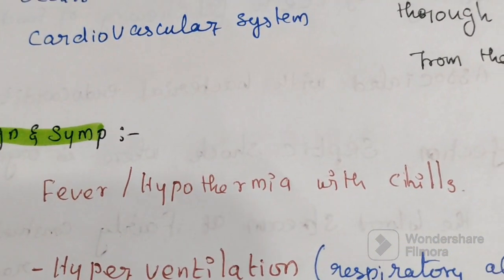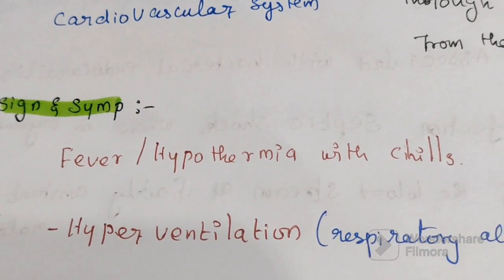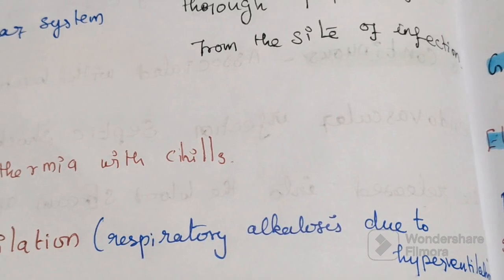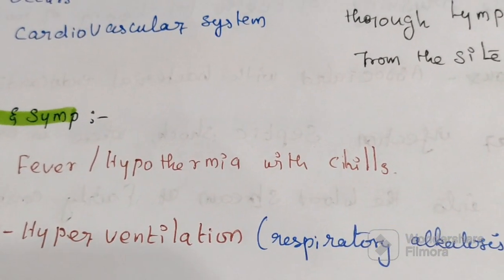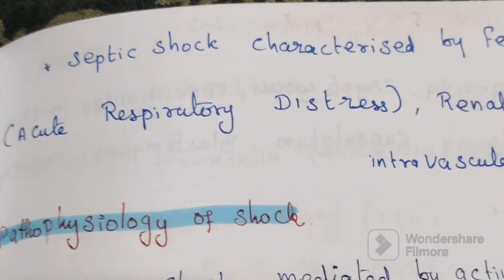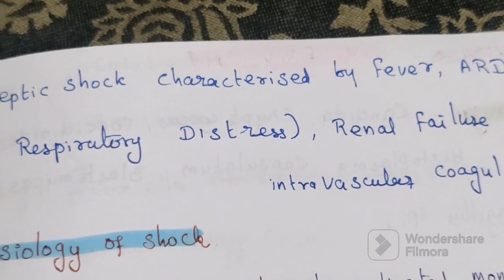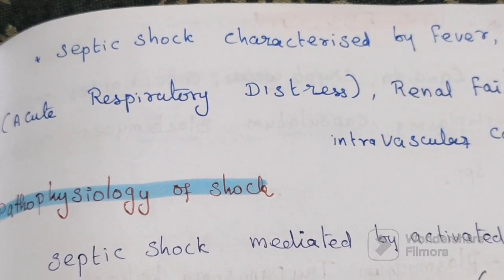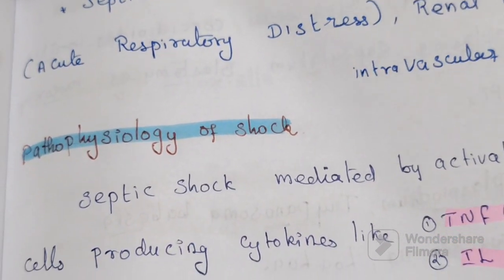The signs and symptoms of septicemia include fever, hypothermia with chills, and hyperventilation. Hyperventilation leads to subsequent respiratory alkalosis, with oxygen and carbon dioxide changes causing acid elimination. Septic shock is characterized by fever, acute respiratory distress, shock, renal failure, and intravascular coagulation.